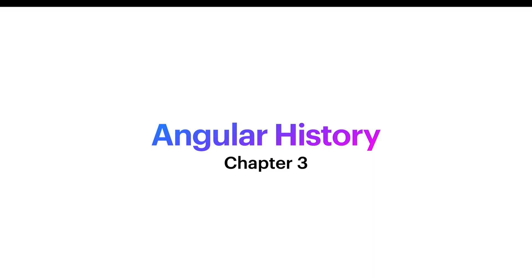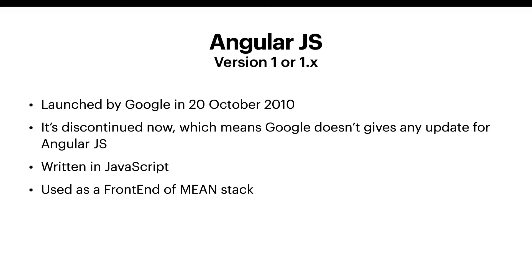Angular was initially known as AngularJS and it was launched in June 2010 by Google. After a few years it was discontinued, meaning Google is no longer providing any updates to AngularJS applications. AngularJS was completely written in JavaScript and was known as part of the MEAN stack front-end development, where M is MongoDB, E is Express.js, A is Angular for front-end, and N is Node.js for the API.